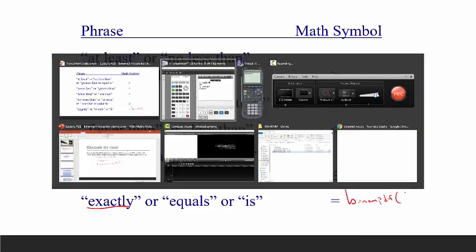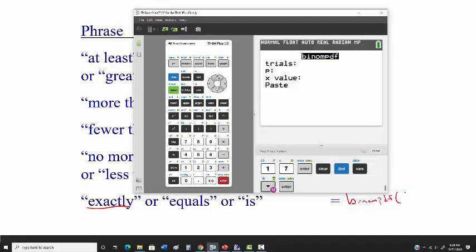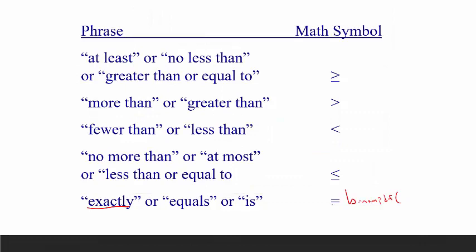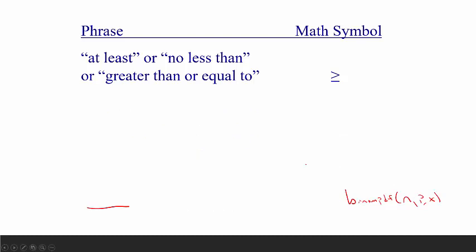What you need to put in, if you look back here at the calculator, is the trials, P, and then X. So that's just N, then P, then X.